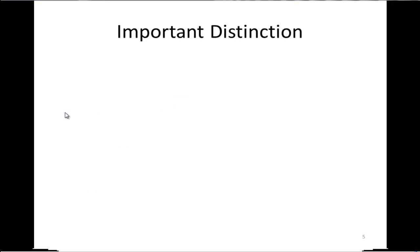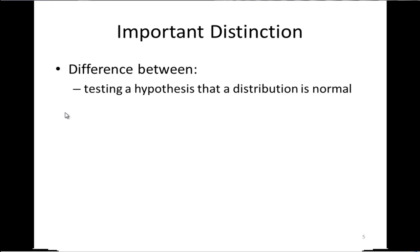An important distinction to make in the context of evaluating normal distributions is that these z-tests and Shapiro-Wilk-type tests are not wrong or inaccurate. There is a difference to testing a hypothesis that a distribution is normal. Sometimes you theoretically want to test that hypothesis.